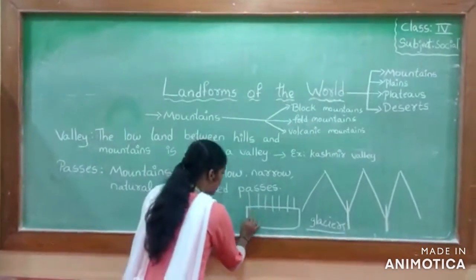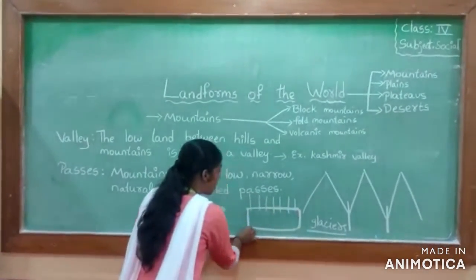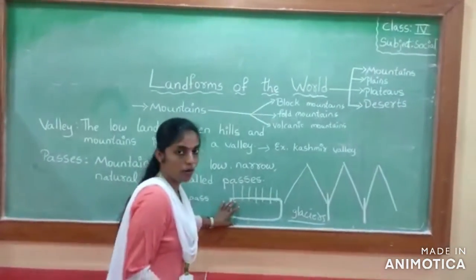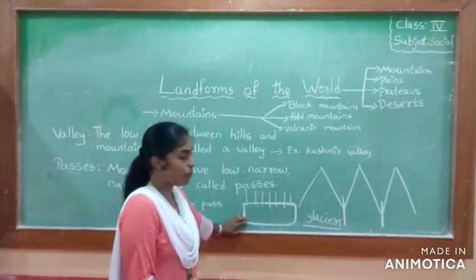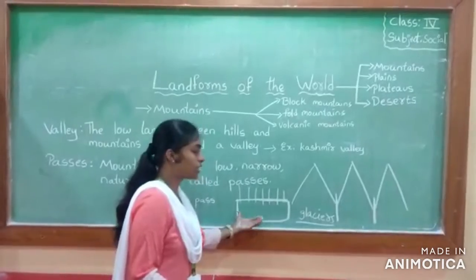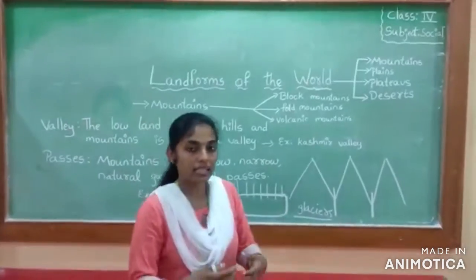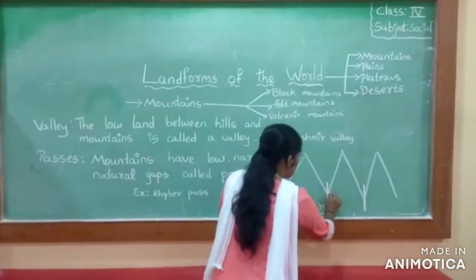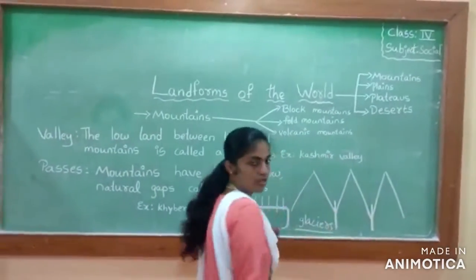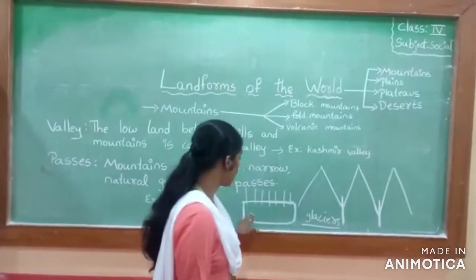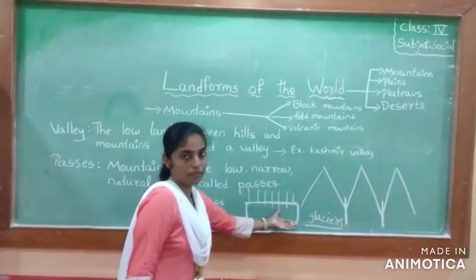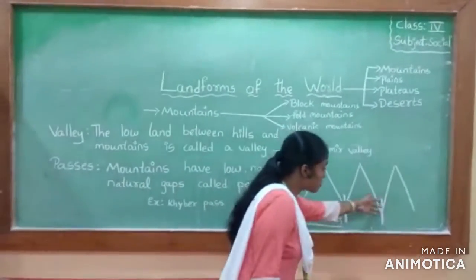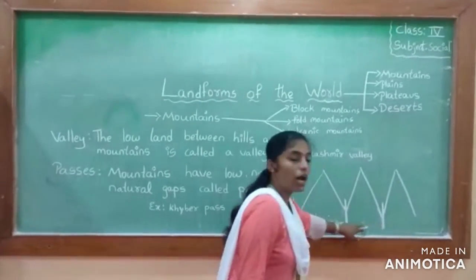The water changes into a solid form. According to temperature, what happens? This ice — these glaciers — will totally melt. And this water will flow from these gaps. So these are called valleys. The rivers and the glaciers are formed with the melting water, with the melted ice that comes from these mountain gaps. So these gaps are called valleys.